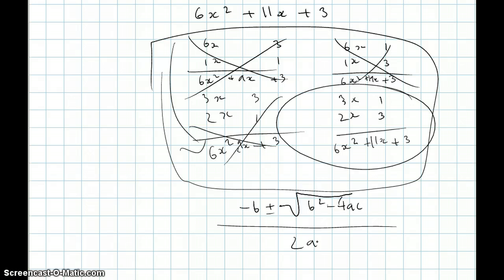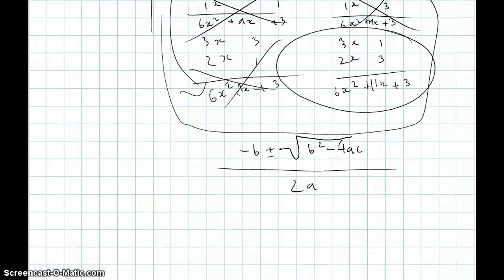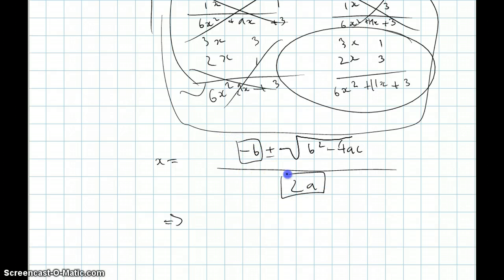Now, something that you can do to make this easier or faster for some people, and this is used in Vedic mathematics as well, is you could take, just using algebraic manipulation, you could take the 2a on the other side. Because x is equal to this, 2a on the other side, and then you take this b on the other side as well. So, then you would get something like this. 2ax plus b equals plus or minus root b squared minus 4ac.